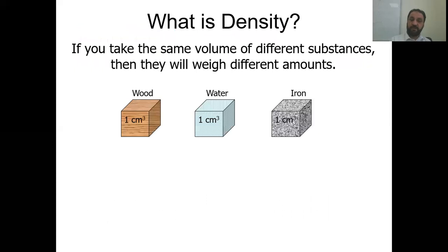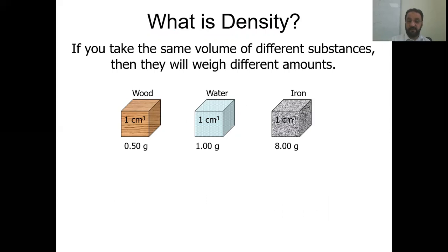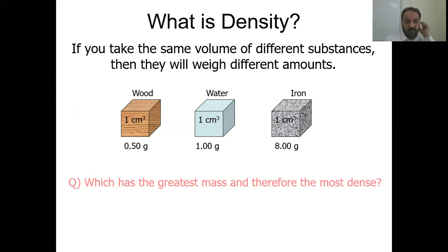Consider three objects having the same volume of one centimeter cube: wood, water, and iron. Iron has the greater weight because it is more dense. Wood has a mass of 0.50 grams, water is 1 gram, and iron is 8 grams — all in the same 1 centimeter cube block. The particles in iron are very close to each other, so density is more. Iron has the greatest mass and is the most dense.